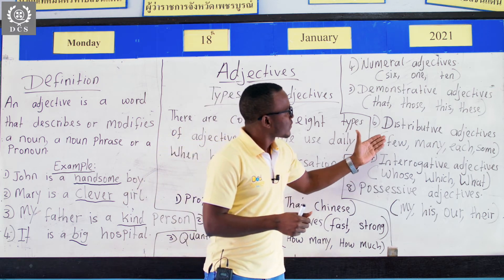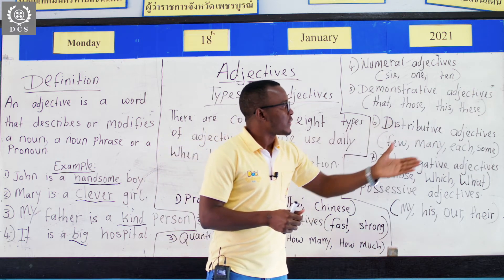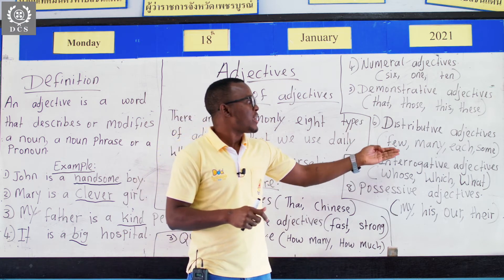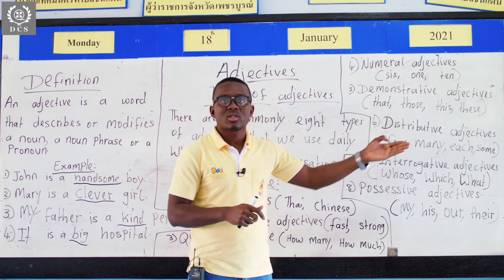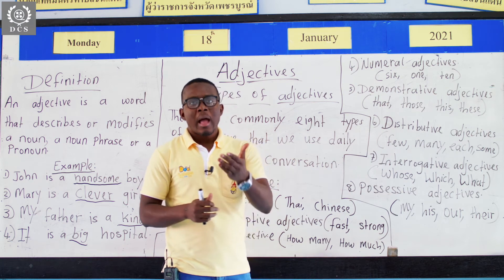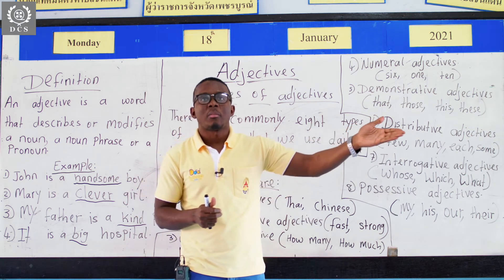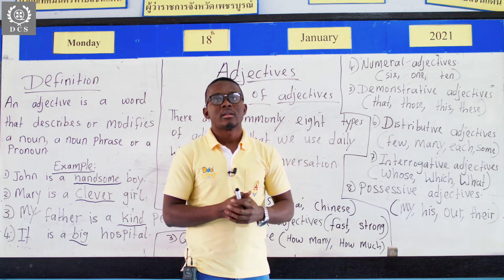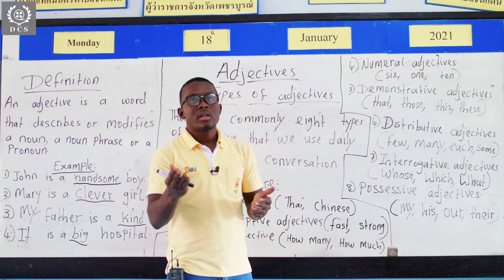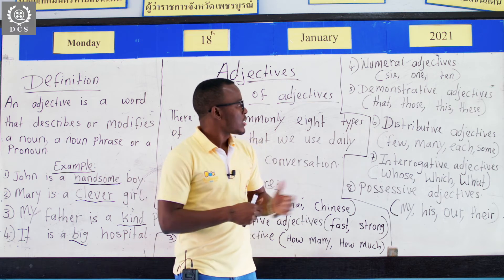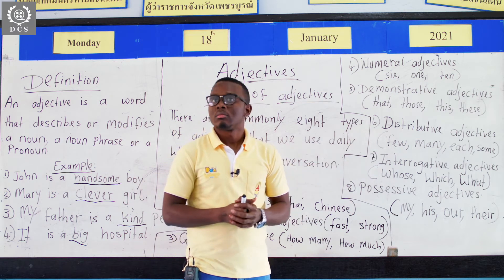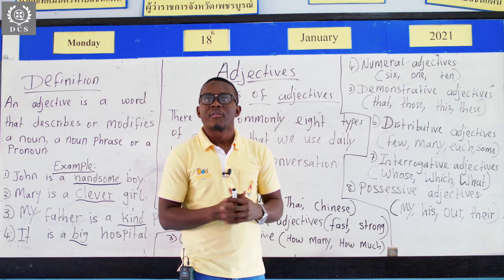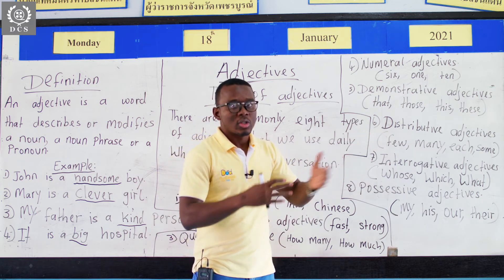The next one, distributive adjectives, are words like few, many, each, some. For example: I gave her some candy. She gave me a few books. So they are used to distribute something.